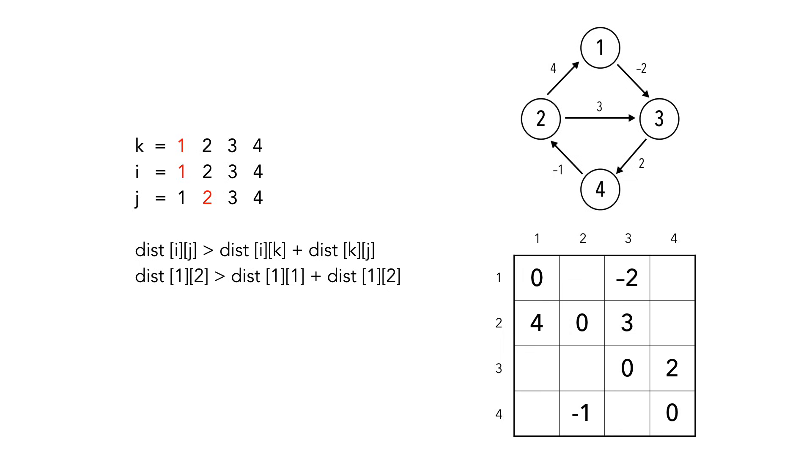Setting j to 2, we see the same result. Likewise, when j is 3 and 4, our if condition isn't true, and we don't make an update to the table.